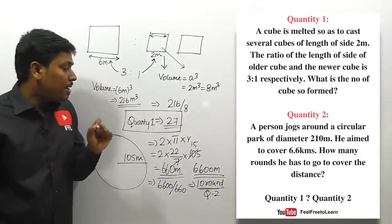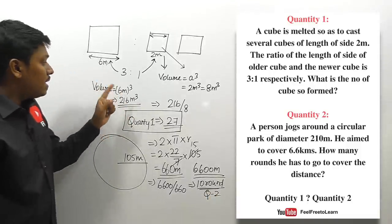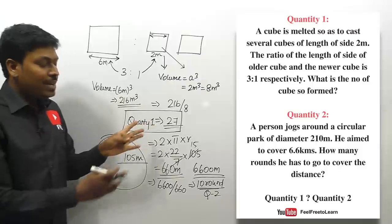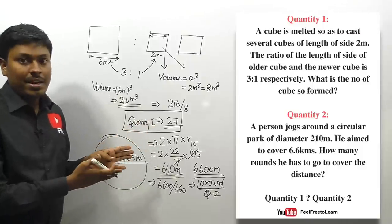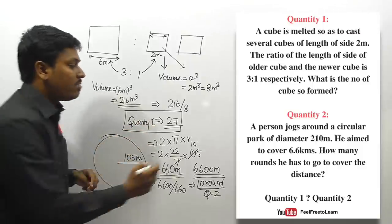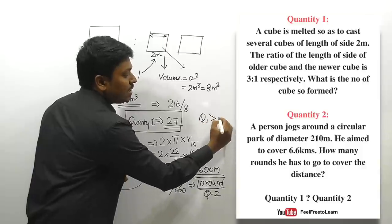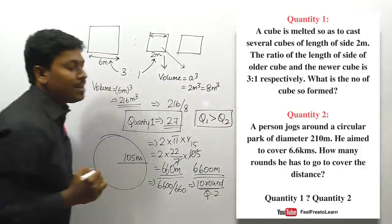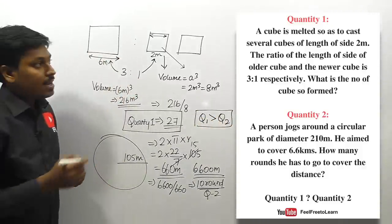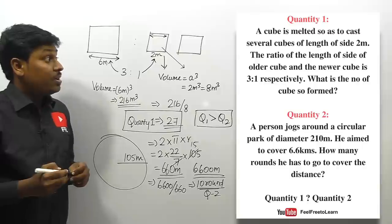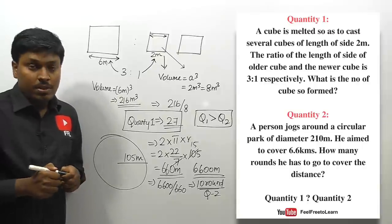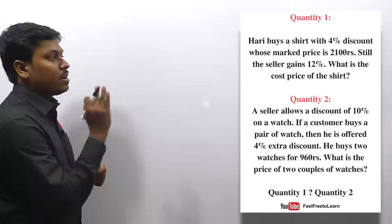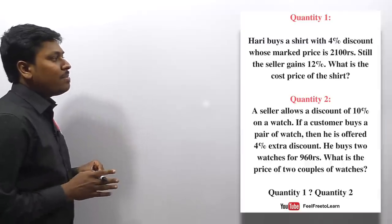Quantity one is 27 and quantity two is 10. Since 27 > 10, quantity one is greater than quantity two. The answer for question two is quantity one greater than quantity two.